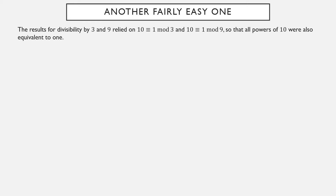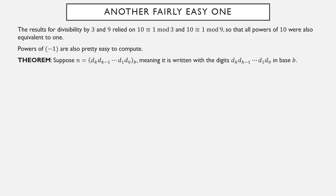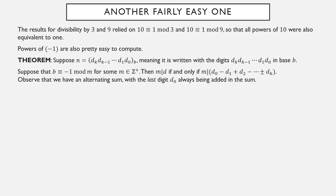There is one more fairly easy divisibility trick. The results for 3 and 9 relied on the base 10 being equivalent to 1 modulo those numbers, making all powers equivalent to 1. But powers of −1 are also easy to compute — they just alternate between 1 and −1. So suppose n is written in base b, and b ≡ −1 mod m. Then m is a factor of n if and only if m is a factor of the alternating sum: d_0 − d_1 + d_2 − d_3 + ⋯, starting with a plus at the last digit, then minus, plus, minus, and so forth.